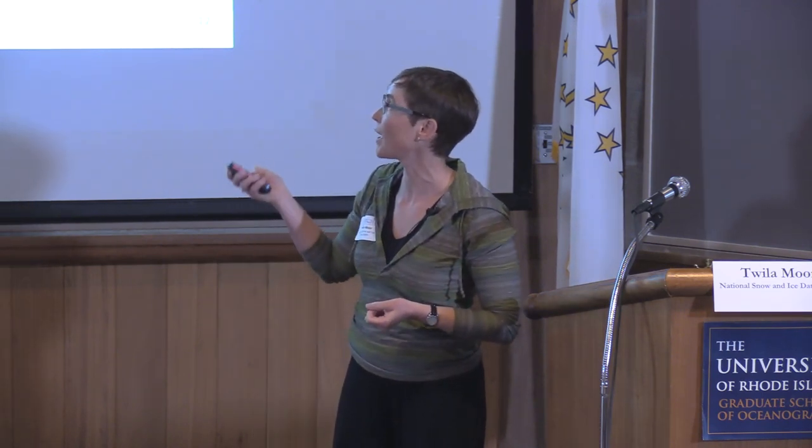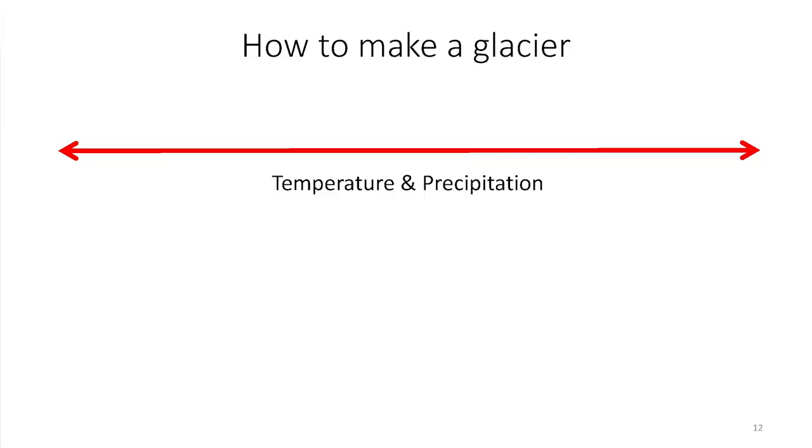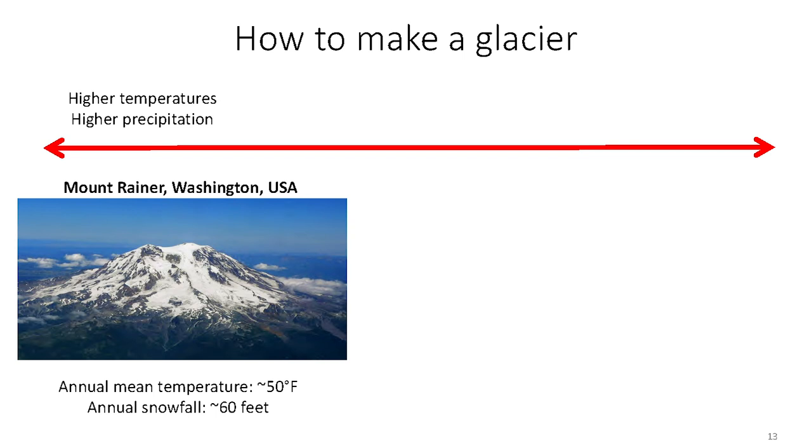I want to talk briefly about how it is that we make a glacier. In order to make a glacier, we have to have snow that is sticking around year to year — piling up snow, and then as we warm things up in summer, we have to not lose all of that snow so it can build up glacier ice. There are two ingredients: temperature and precipitation. We can have places that have fairly high temperatures and can sustain glaciers because they have high precipitation. On Mount Rainier, annual snowfall is about 60 feet per year. It doesn't matter that the average temperature is 50 degrees Fahrenheit because summer is just not long enough to melt all that snow. So we can have glaciers in pretty warm places — and that's true for our tropical glaciers.